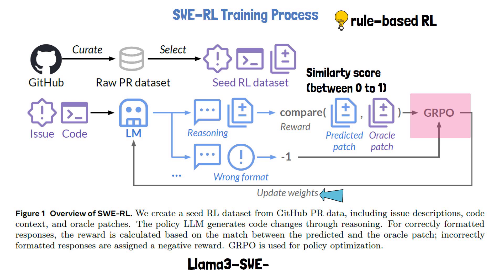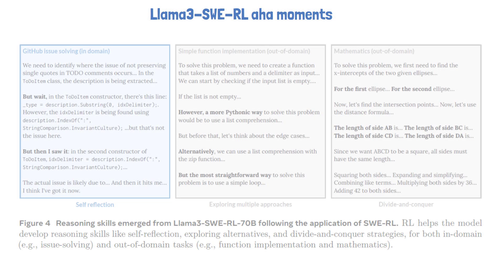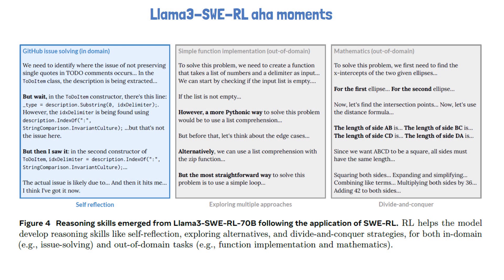The model trained with this approach is called Llama 3 SWERL. Applying this reinforcement learning training process confirms the 'aha moment' discovered by DeepSeek R1, but this time in the context of real-world software engineering tasks. Given a problem, the model learns to allocate more thinking time to reflect on its initial assumptions during the reasoning process. This isn't something the researchers explicitly programmed — it's an emergent behavior that arises naturally through reinforcement learning. Surprisingly, the researchers identified additional aha moments where the model developed general reasoning abilities that transfer to out-of-domain tasks, even though these tasks were not included in the reinforcement learning dataset. One example is a simple function implementation task where the model explores alternatives for the solution. Another example is a math question where the model demonstrates a divide-and-conquer strategy, breaking the problem into smaller pieces and solving each part step-by-step.